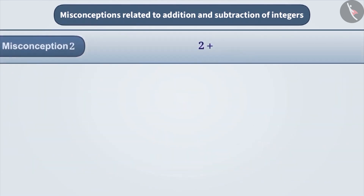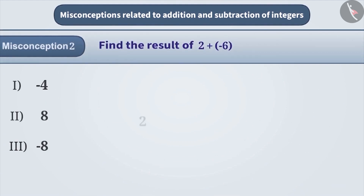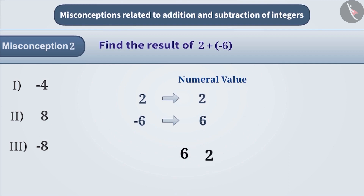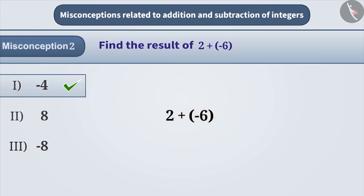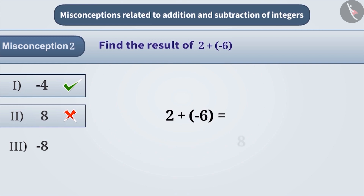Misconception 2: Find the result of 2 plus minus 6. When two integers have different signs, in order to add them, we have to consider the value of both the numbers without sign. This is called a numeral value. After that, the smaller number is subtracted from the larger number. Later, the sign of the larger number is included in the result. By doing so, we get the correct answer, option 1, that is, minus 4. While adding two integers, sometimes the signs are ignored and the numbers are added, which gives the incorrect answer 8. Similarly, many times the numeral values, that is, values without sign, are simply added and the sign of the larger number, 6, is included, giving the incorrect answer minus 8.